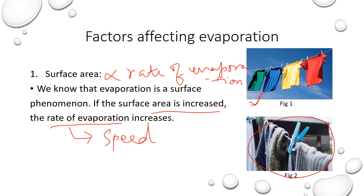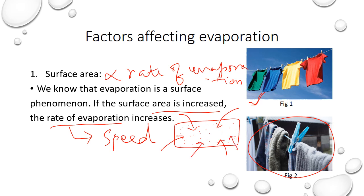Now why does this happen? When the surface area increases, the number of particles exposed to the atmosphere is greater. So more particles can gain energy from the surroundings and evaporate. More particles get evaporated at once, so the rate of evaporation is more. Whereas if the surface area is small, fewer particles are exposed to the surroundings and get evaporated. So they are directly proportional.